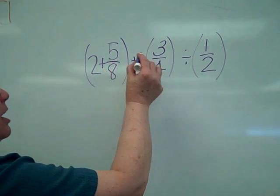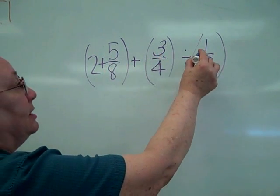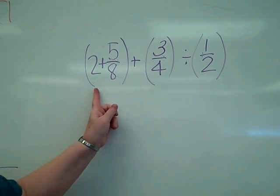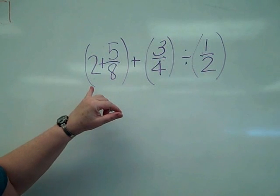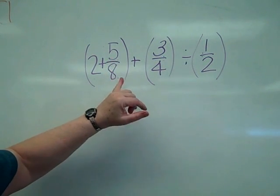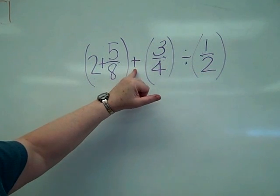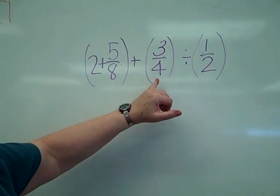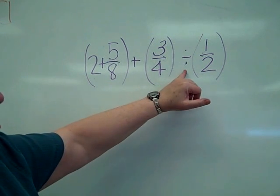Remembering that all of your fraction bars are division signs. So when I punch this in, I punch it in exactly as it is. I'm going to put in parenthesis, 2 plus 5 divided by 8, end parent, plus beginning parent, 3 divided by 4, end parent, divided by.